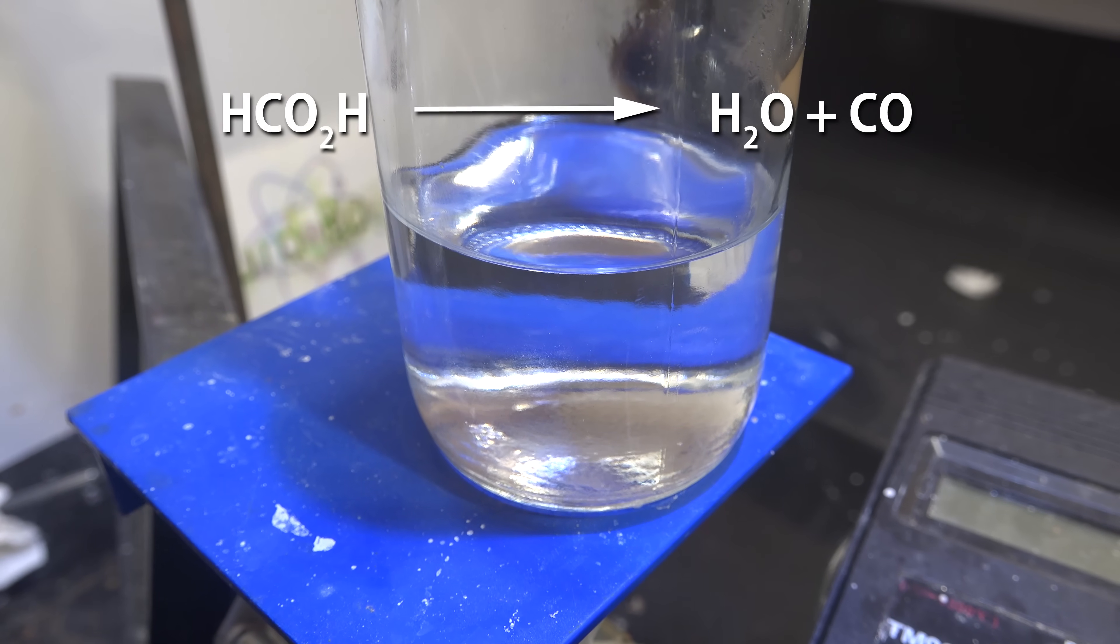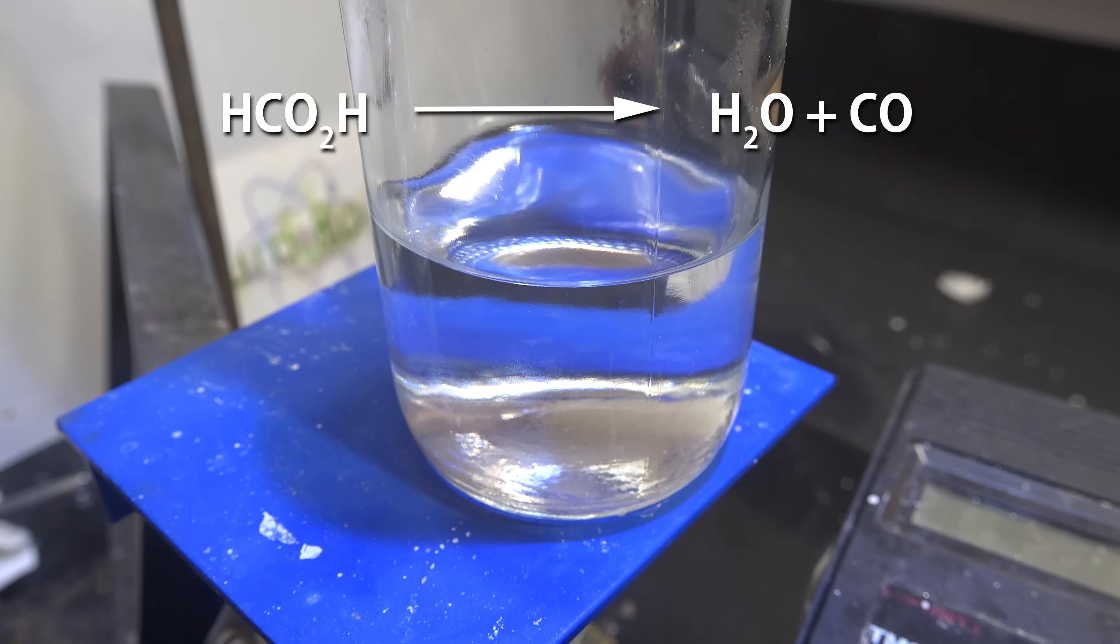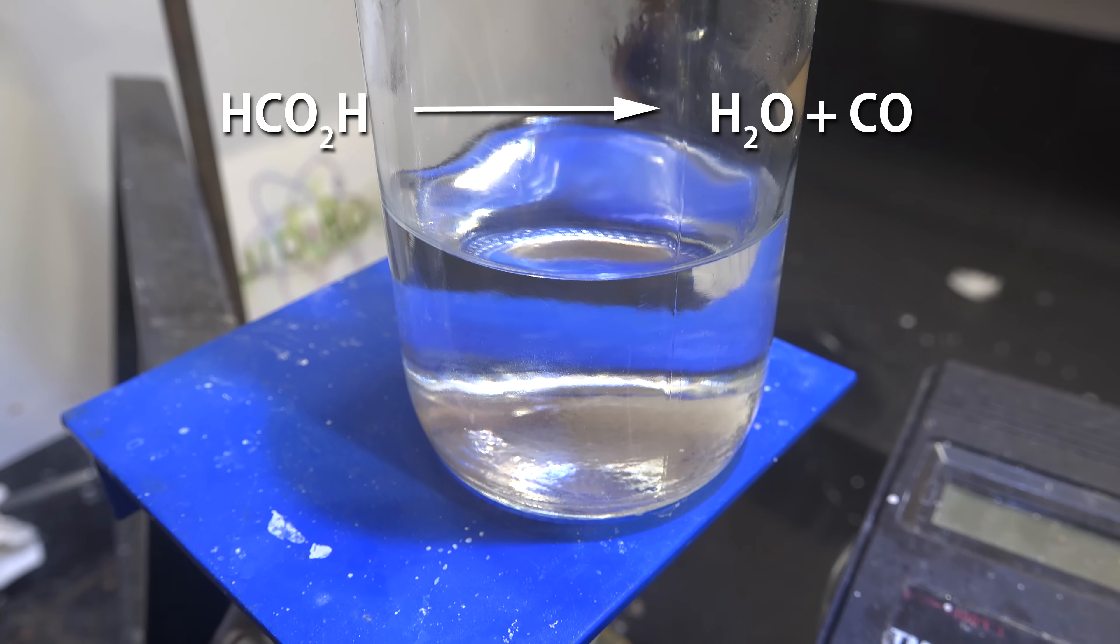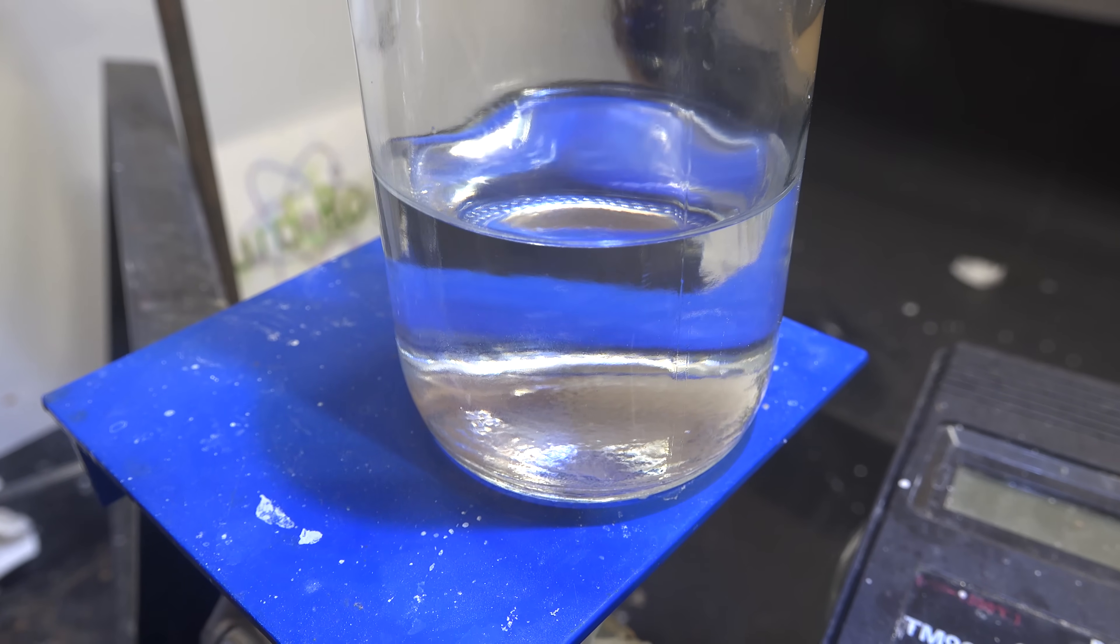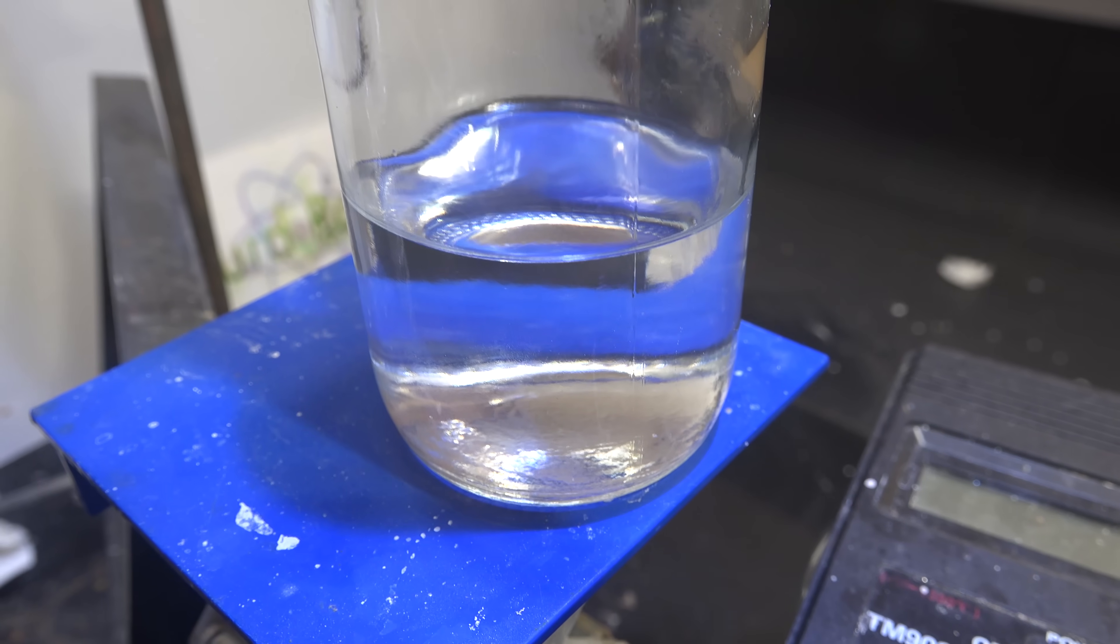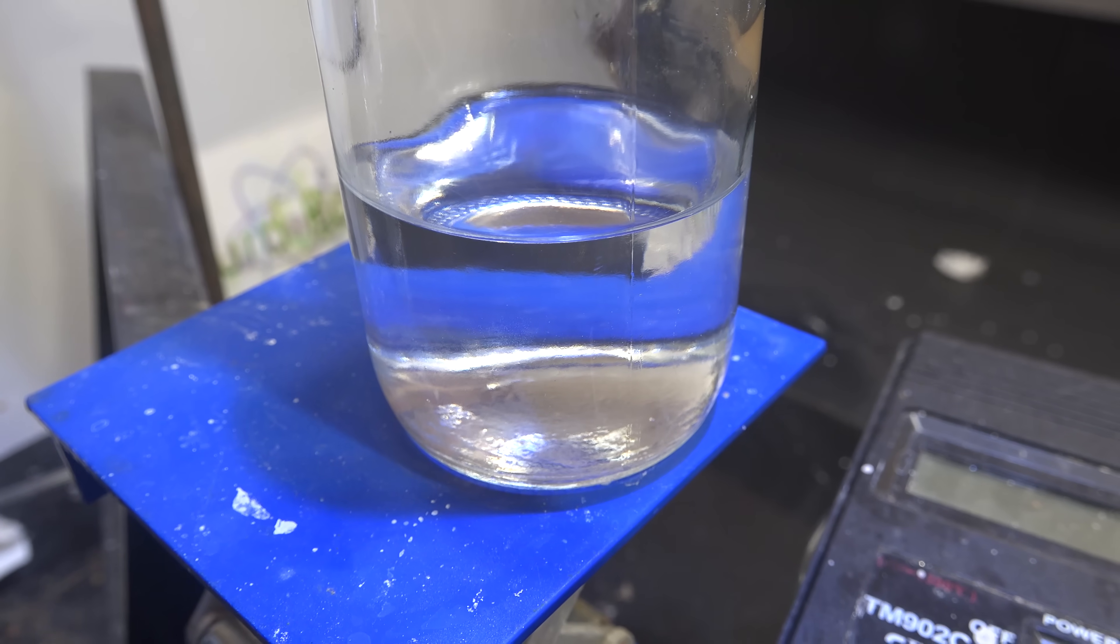Formic acid has a tendency to generate small amounts of carbon monoxide when you attempt to dehydrate it. Especially if you use sulfuric acid as a dehydrating agent. I thus recommend storing it and using it as the azeotrope. For most amateur uses some water isn't a problem anyway.